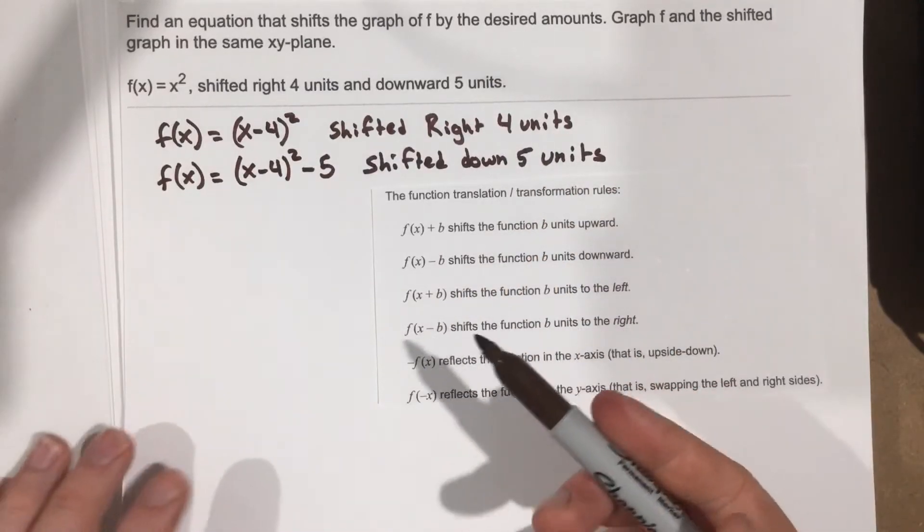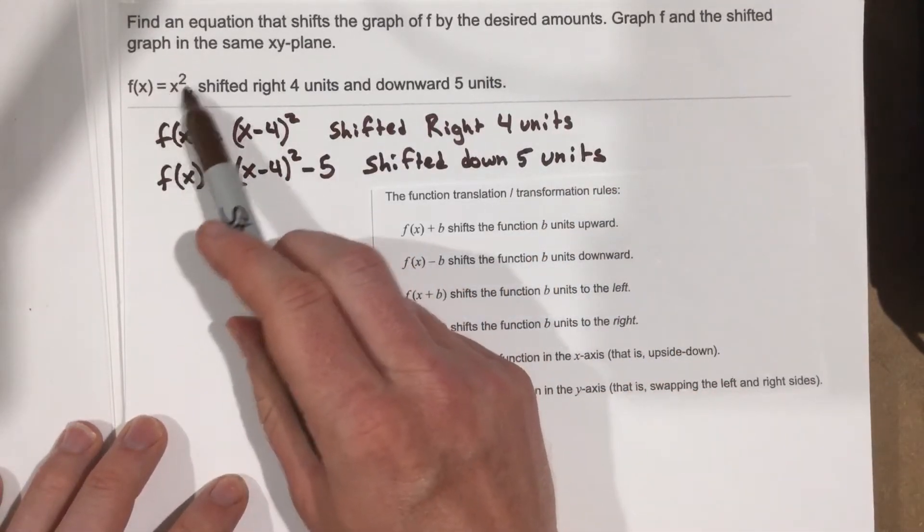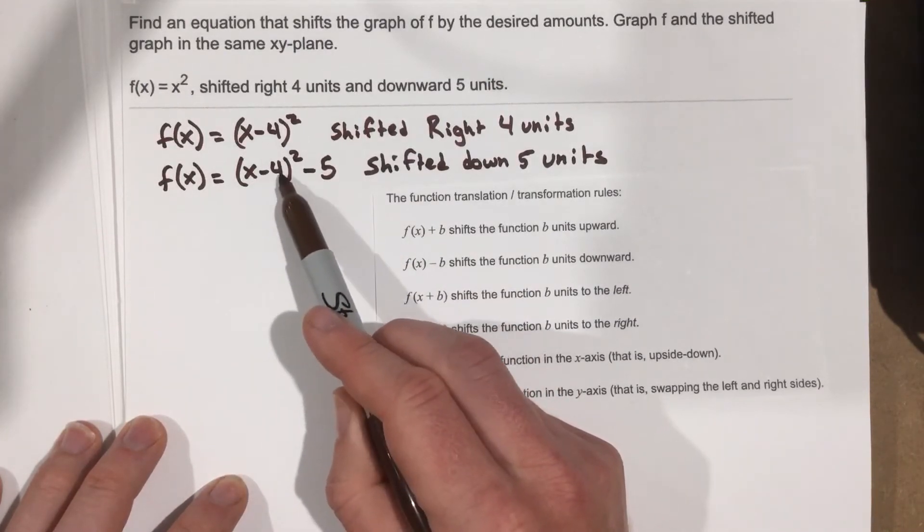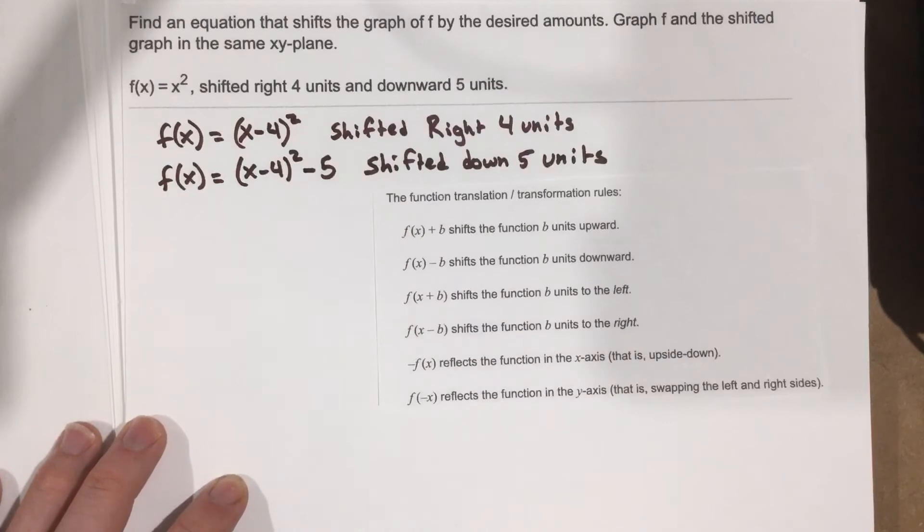So this is how we can set up different functions. This function is the parent function. This function has been shifted to the right 4 and down 5. Seems pretty simple.